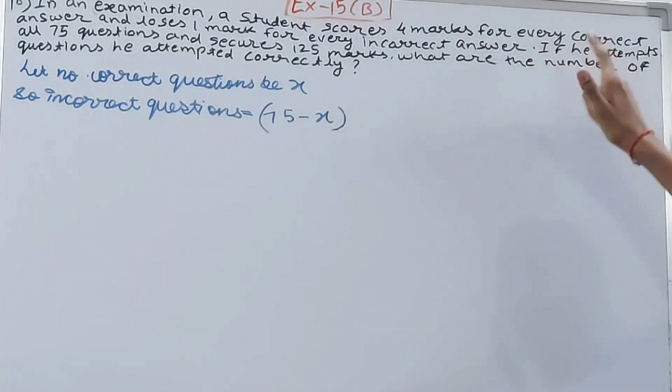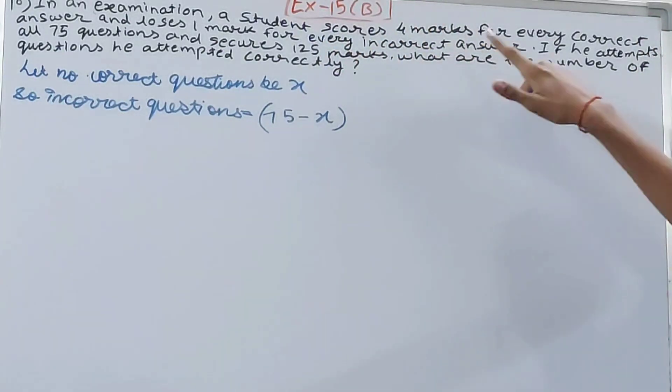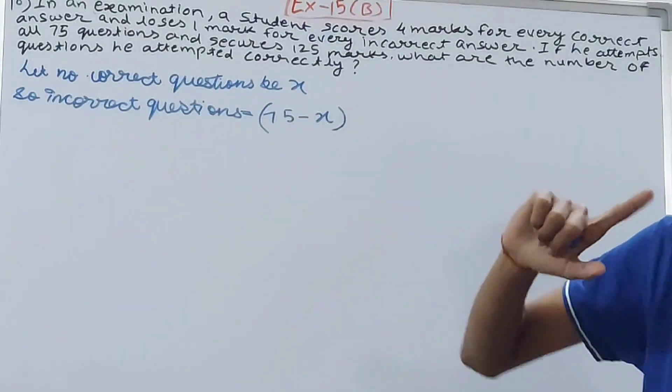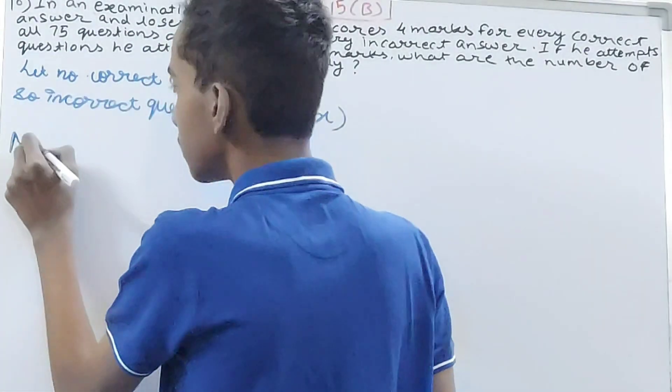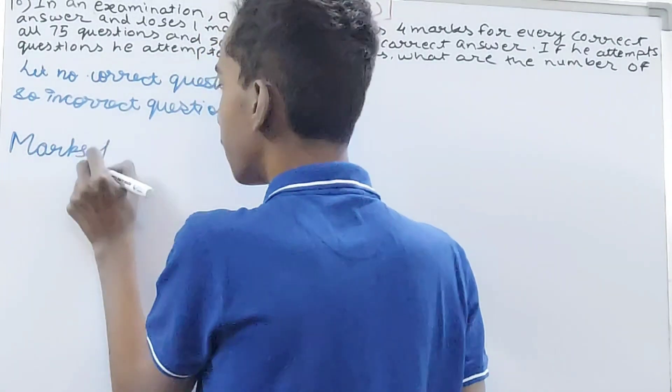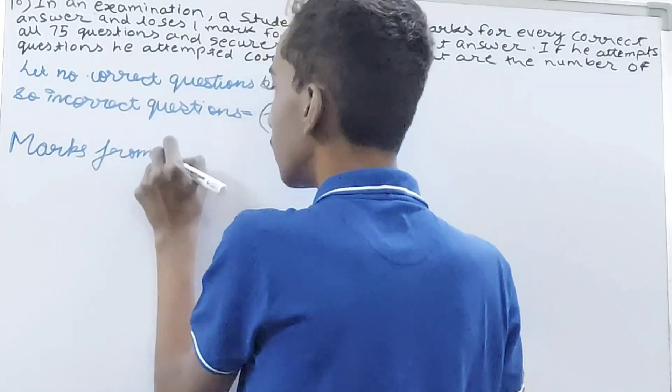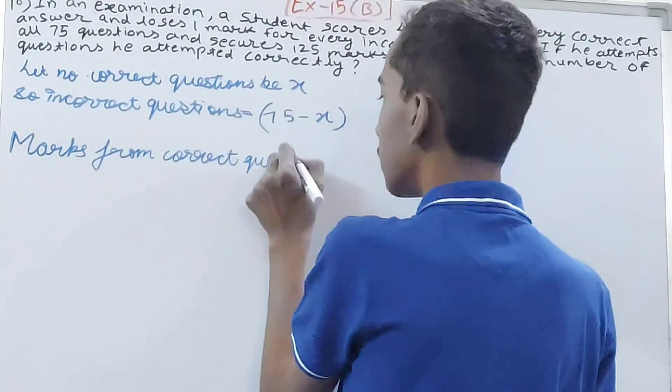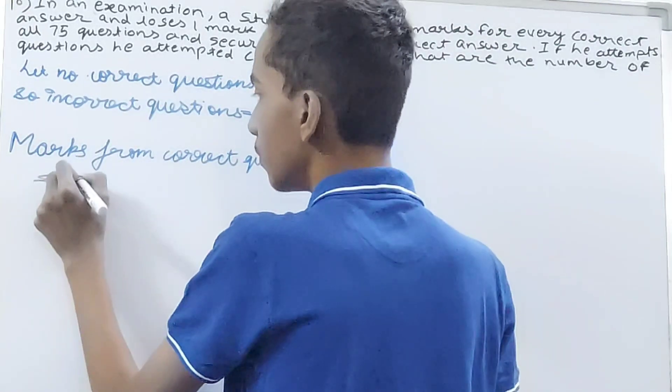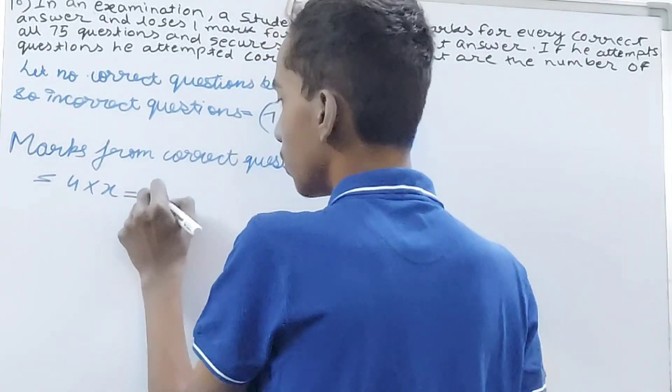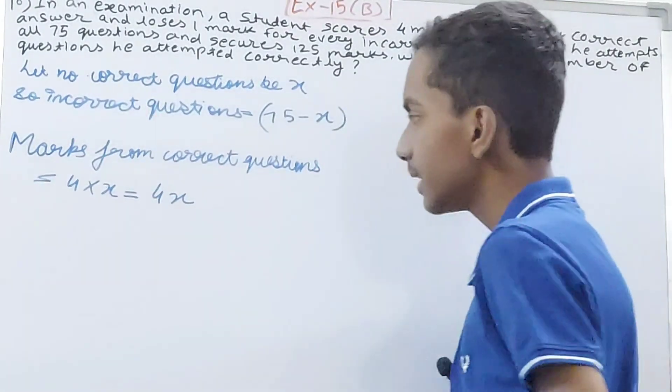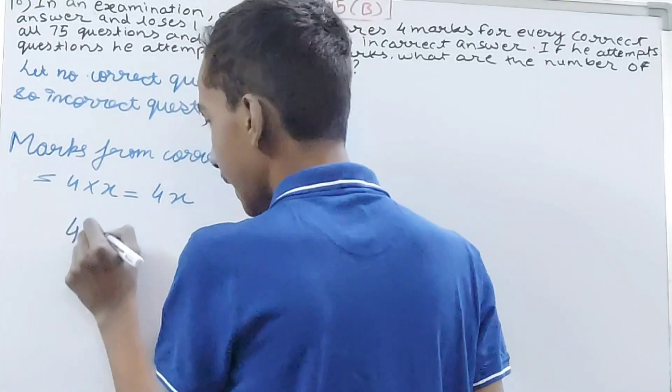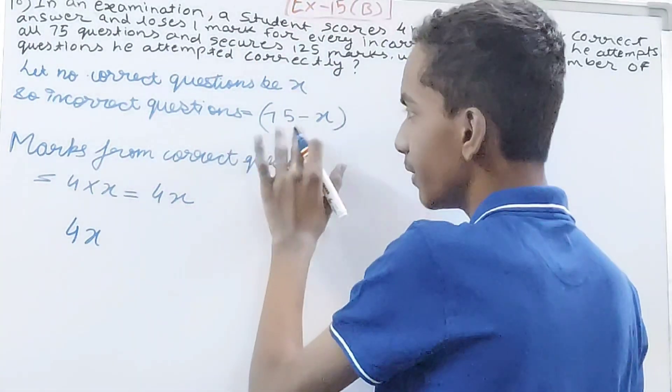Marks from correct questions is equal to 4 into x. This is 4x. Now you can see this many marks he has got from the correct questions. So if I have 4x, and for every incorrect question he will lose one mark, so minus—